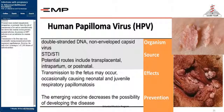HPV is an STD. Potential routes of transmission include transplacental, intrapartum, or postnatal. Since the risk of transmission is low and no controlled study has shown that caesarean section prevents neonatal infection, HPV infection is not an indication for caesarean section. Transmission to the fetus may occasionally cause neonatal and juvenile respiratory papillomatosis, but the risk is low — occurring in one of 1,000 fetuses of infected mothers.